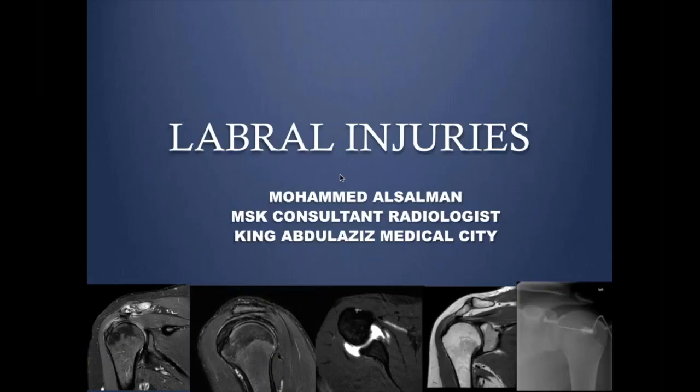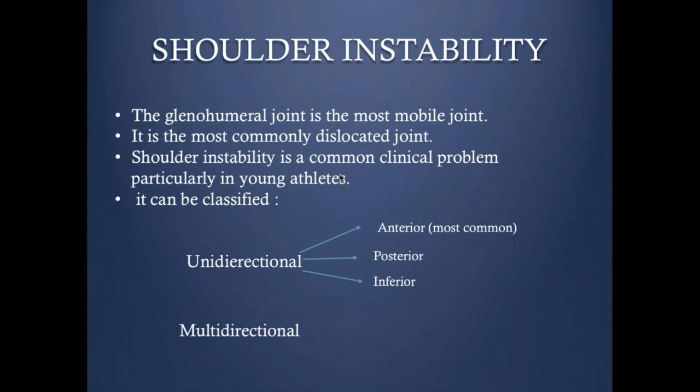We're going to move to the labral abnormalities or shoulder instabilities. The glenohumeral joint by nature is the most unstable joint in the body. It's the most mobile, has a wide range of motion, and is the most commonly dislocated joint.